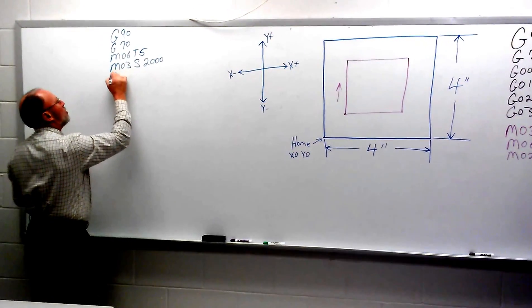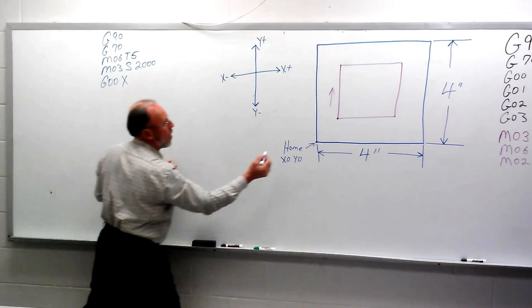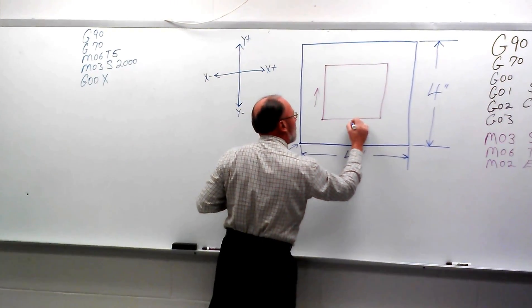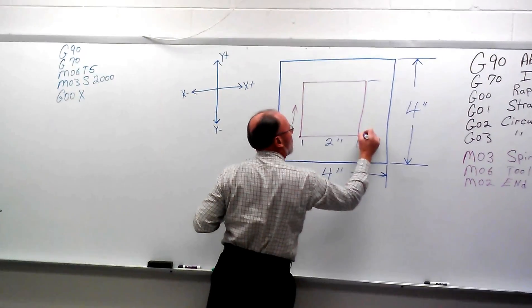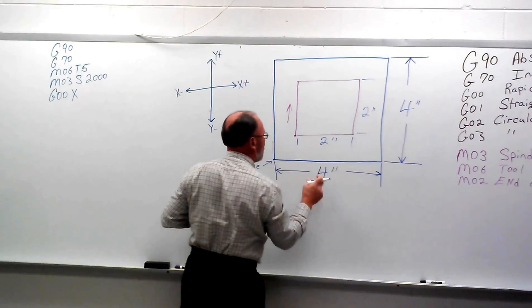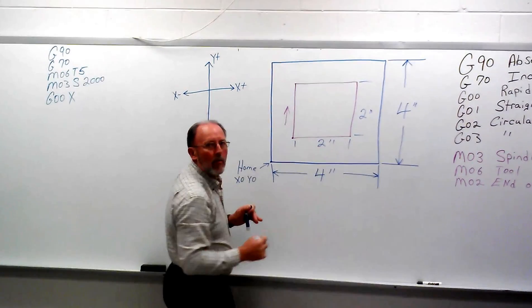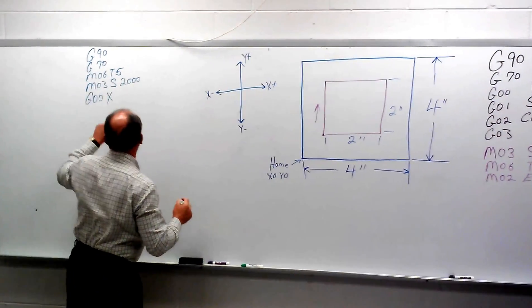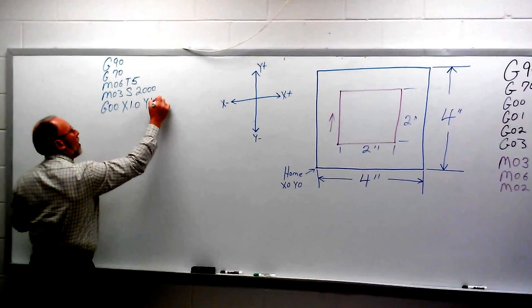That's going to be a G00, I'm going to rapid to that point. X is going to be going over 1 inch because here we have 2 inches, and we have 2 inches this way as well. So we take 4 minus 2, we have 2. We divide that by 2, that means we have 1 inch all the way around the perimeter. So X will be going in 1.0, Y is going in 1.0.